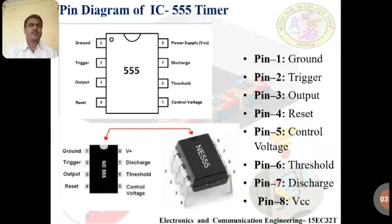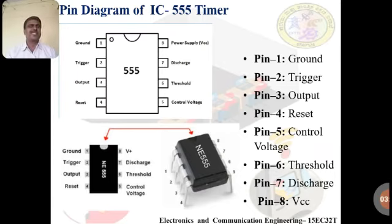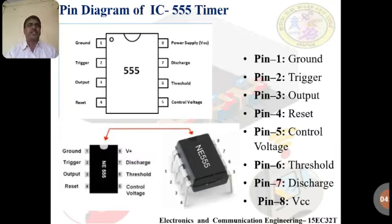Pin 5 is the control voltage pin — it is the input for the first comparator. Pin 6 is the threshold input pin — when you exceed this voltage level, some changes happen in the first comparator output. Pin 7 is the discharge pin — you connect an external capacitor here which discharges through this pin. Pin 8 is VCC, where you connect the supply voltage of +5V to +18V.